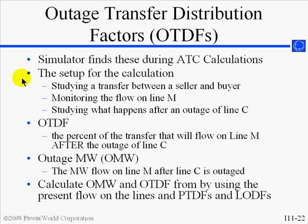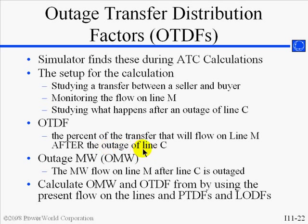With the ATC tool, you study a transfer between a buyer and a seller, and then Simulator will monitor the flows on all the lines in the system, and then study the effect of those flows for all the outages specified by a set of contingencies. The OTDF is then the percent of the transfer between the buyer and the seller that will flow on line M after the outage of a different line C. The OTDF for line M with the outage of line C is just the PTDF for line M plus the LODF for line M with the outage of line C times the PTDF for line C. The ATC calculation also reports the outage megawatts, which is a linear estimate of the megawatt flow on the line after the other line is outaged.